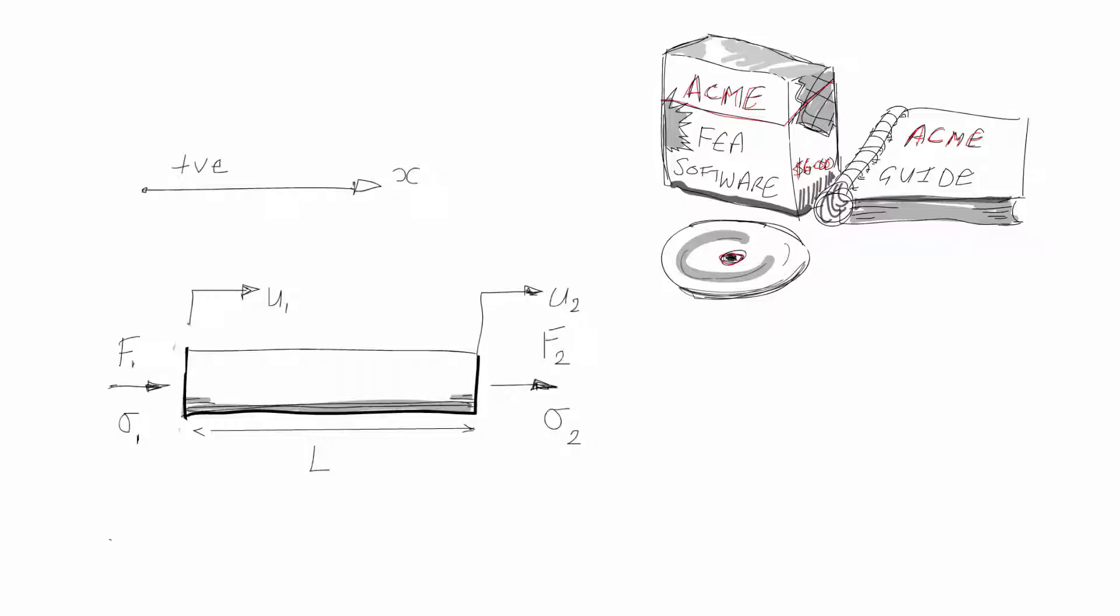One of the first things we have to do with a new element is to define a sign convention. It might seem a bit pedantic, but unless we can get that right, we can have difficulty later on. So displacements are positive to the right. Internal nodal forces are also positive to the right. And finally, internal nodal stresses again are positive to the right.